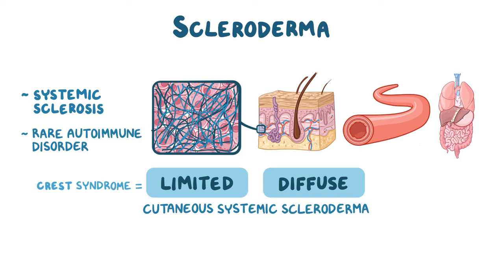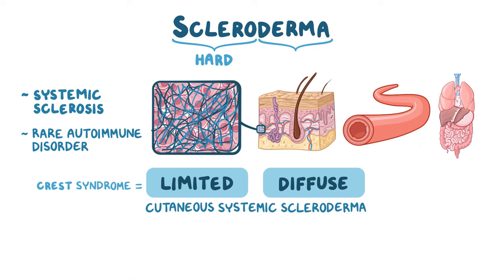The word scleroderma comes from the Greek words sclero, meaning hard, and derma, meaning skin, which points to the hard skin as its most visible feature.